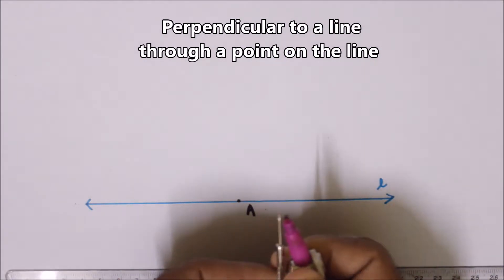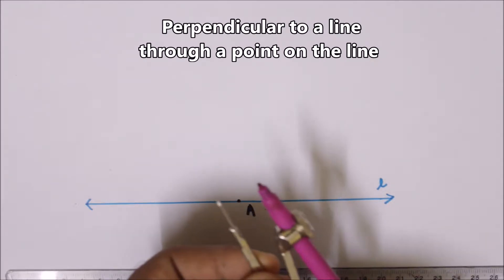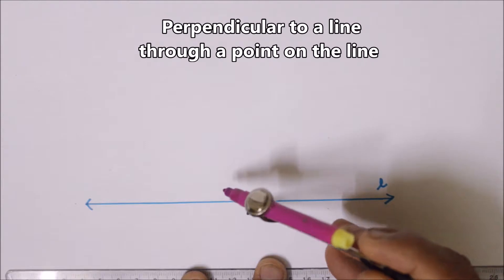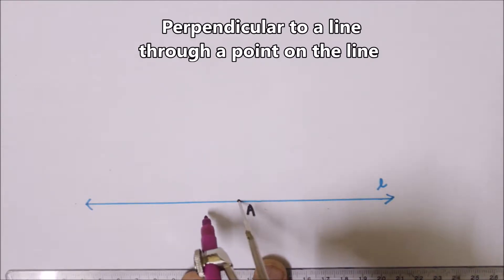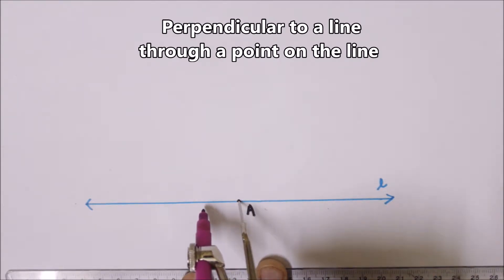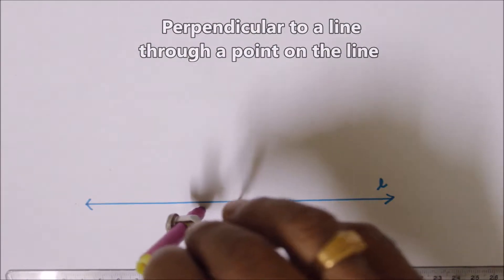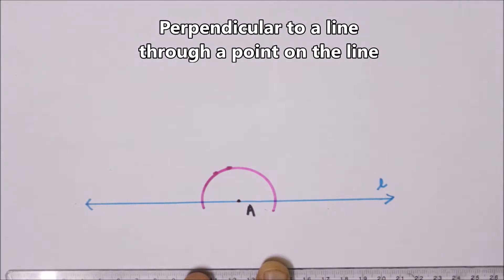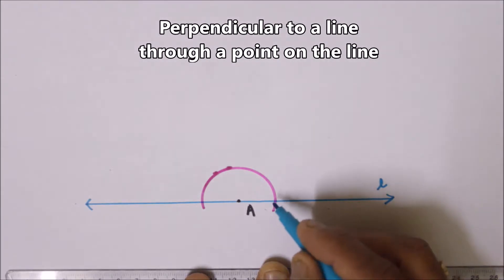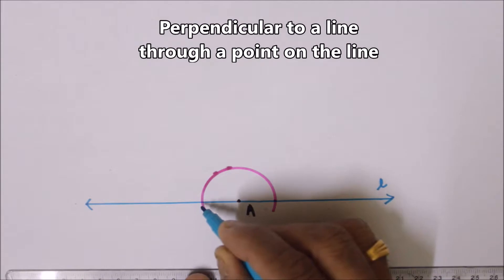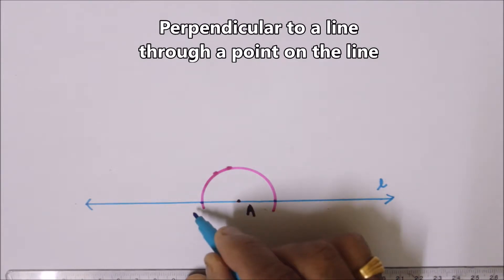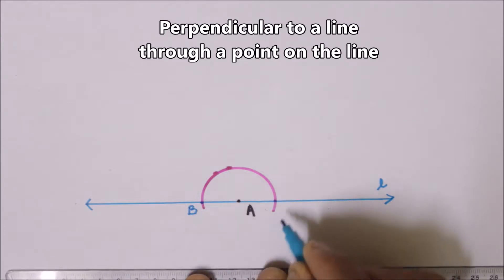Take a compass and set a convenient radius — the minimum radius that you can operate well. With center A, the point which is on the line, I am drawing a semicircle. By doing so, I got two more points on the line on either side of A, which are B and C.